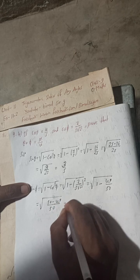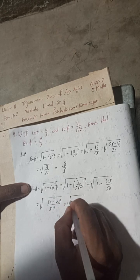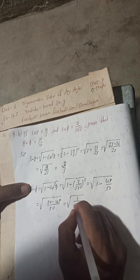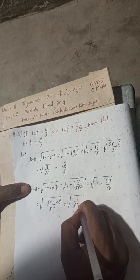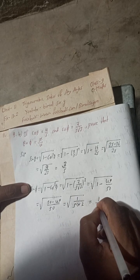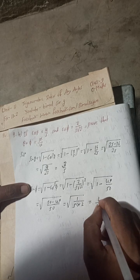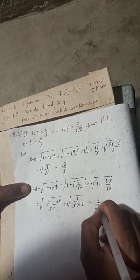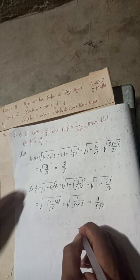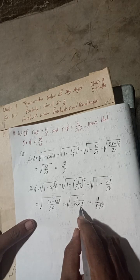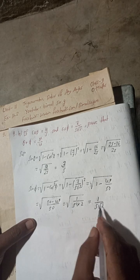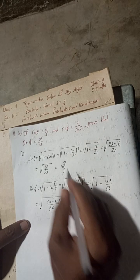1/50 can be written as 1/(5²×2). The 5² comes outside as 1/5, and we have 1/√2 remaining inside the root. So sin φ = 1/(5√2).